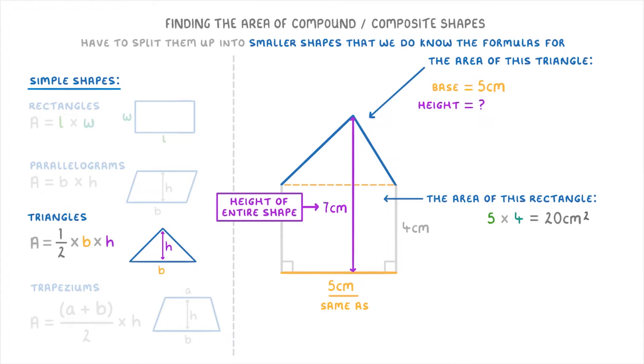What we do know is that the height of the entire shape is seven centimeters and the rectangle makes up four centimeters of that. So the height of the triangle must just be the difference between four centimeters and seven centimeters, which we can find by doing seven minus four to get three centimeters.